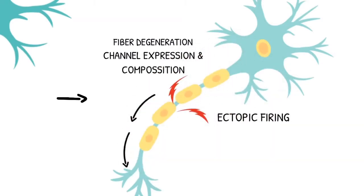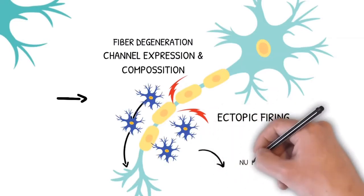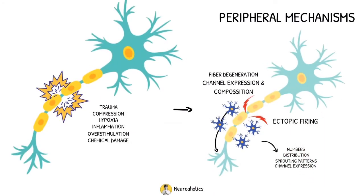In response to axonal damage and its sequelae, satellite glia and autonomic neurons promote alterations in their overall numbers, distribution, sprouting patterns, and channel expression.